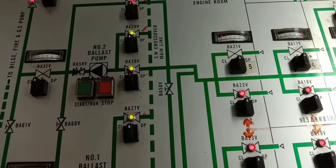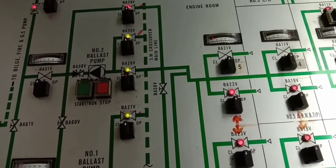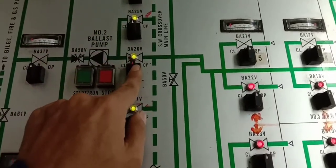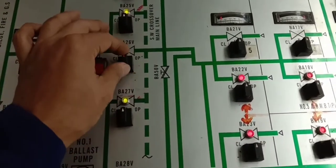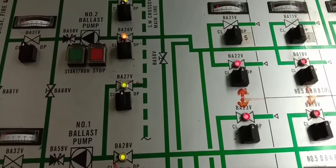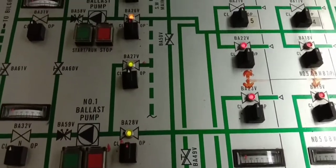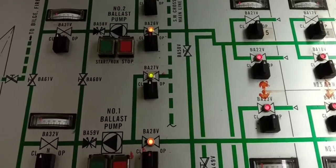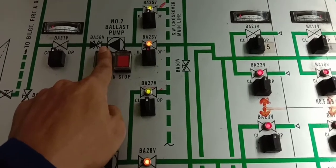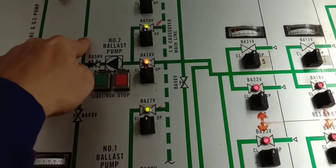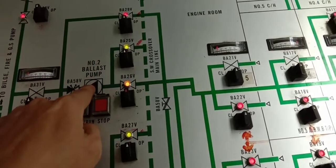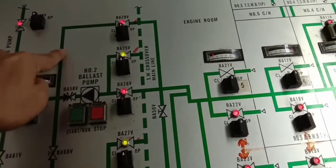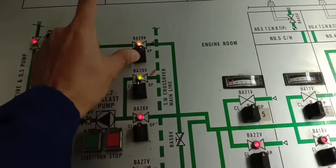You need to close this one because this is for gravity. Close this and close this. Close already. Here, close this one because we want to use the pump. We need to line up another way around. The pump sucks water from the sea chest - this is already open - and then pushes the water through these pipes. We need to open B29.